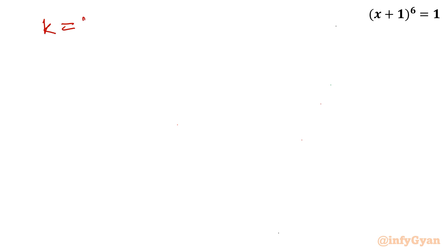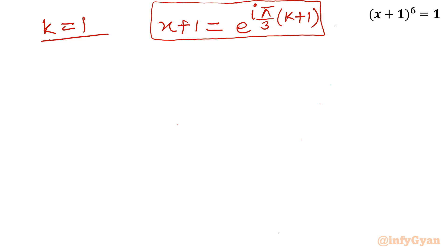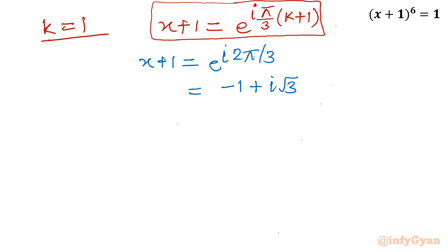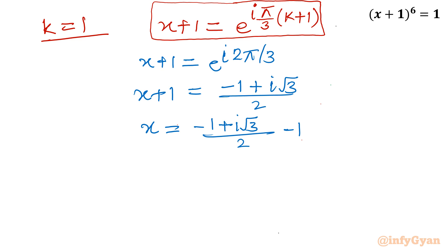For k equal to 1: x plus 1 equals e raised to i 2 pi over 3, which equals minus 1 half plus i root 3 over 2. Taking away 1 from both sides, x equals minus 1 plus i root 3 over 2 minus 1, giving us minus 3 plus i root 3 over 2. This is another complex solution.